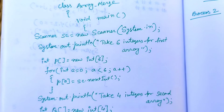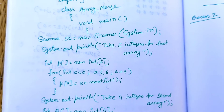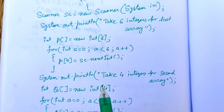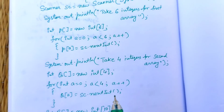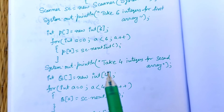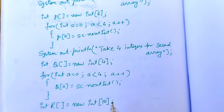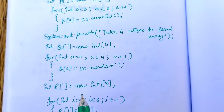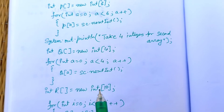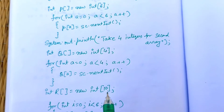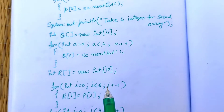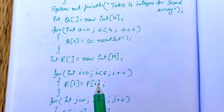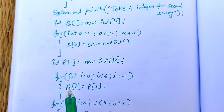First, take six elements for the first array and then four elements for the second array. That means we have 10 elements total, so we have to create another array r to store 10 elements. First, we will store the first six elements into the new array r.